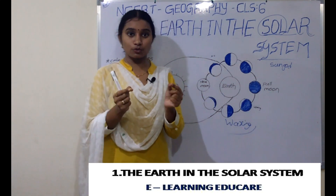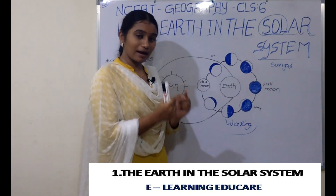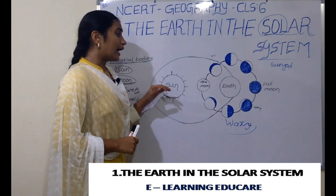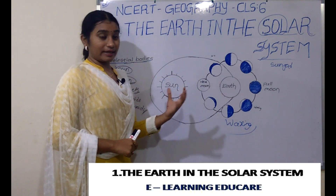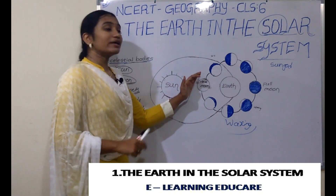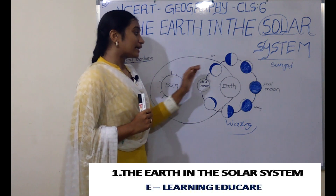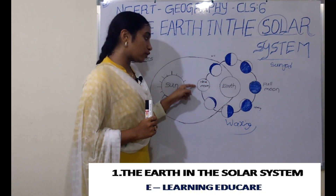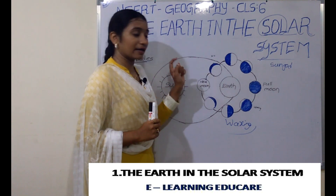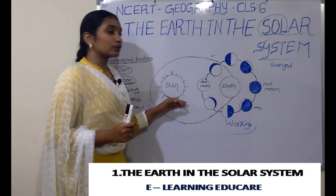The Moon keeps changing. The Moon is reflected in the reflected rays of the Sun. The moon doesn't emit its own light and heat. That's why we see it through the reflected rays of sunlight.